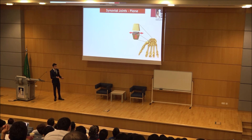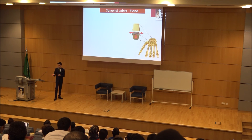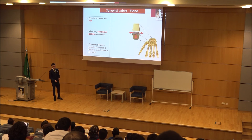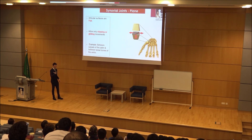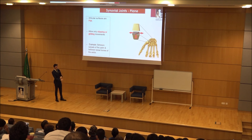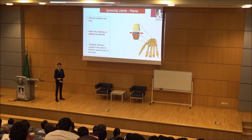Correlating shape and movement: plane joints are non-axial — the example is the carpal bones (and tarsals at the feet). This joint gives a gliding movement. Tarsals are found at your feet — the upper and lower limb structures are very similar to each other.